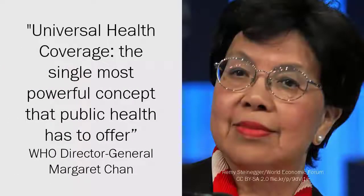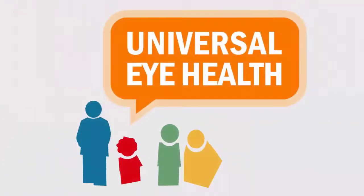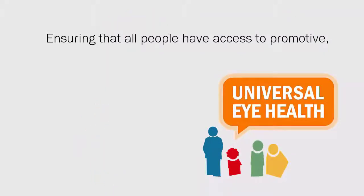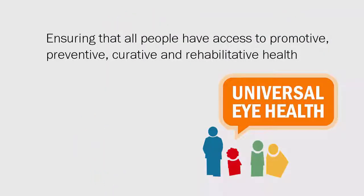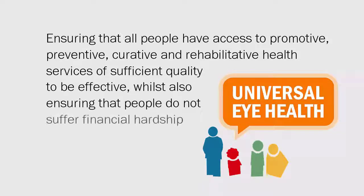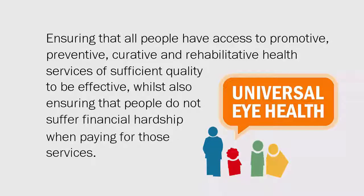Following the World Health Organisation's directive on Universal Health Coverage, the International Agency for the Prevention of Blindness (IAPB) has adopted the universal eye health approach. This is defined as ensuring that all people have access to needed promotive, preventive, curative and rehabilitative health services of sufficient quality to be effective, whilst also ensuring that people do not suffer financial hardship when paying for those services. In other words, all people should enjoy access to the best quality eye care without risk of impoverishment.